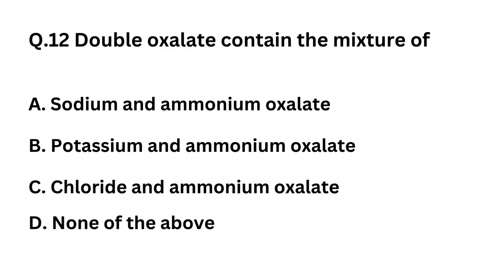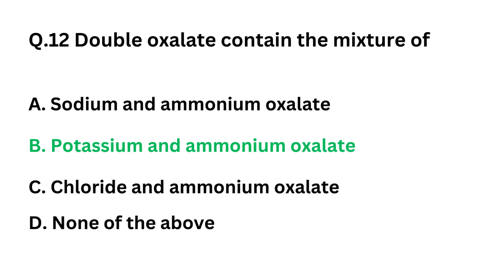Question 12: Double oxalate contains a mixture of. Option A: Sodium and Ammonium Oxalate. Option B: Potassium and Ammonium Oxalate. Option C: Chloride and Ammonium Oxalate. Option D: None of these. The correct answer is Option B: Potassium and Ammonium Oxalate.